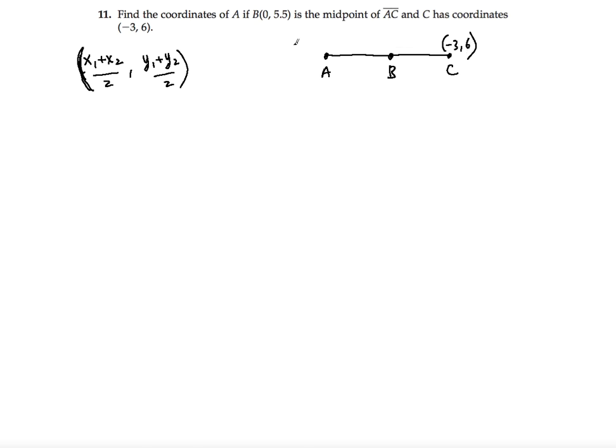Negative 3, 6. And A has, so we need to find A, and we know B, which is 0, 5.5. So notice that A has coordinates x1, y1, and C has coordinates x2, y2. As you can see, we don't know the x1 and y1 because we need to find A, but we know C and we know B.